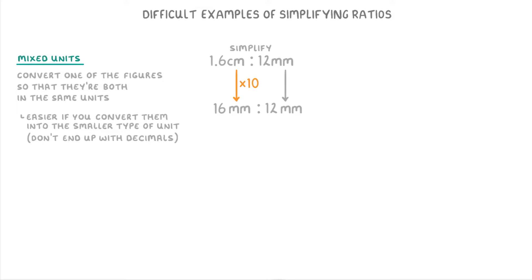So now that we have them both in the same units, we can think of our ratio as just 16 to 12, which we can then simplify like normal by dividing both sides by 4 to get a ratio of 4 to 3.